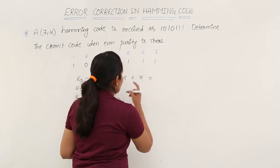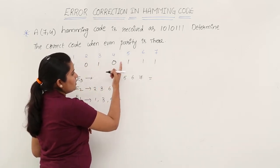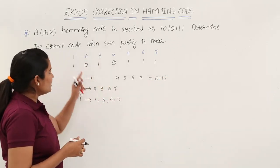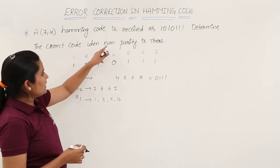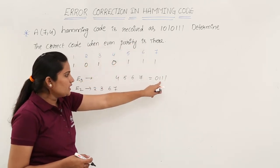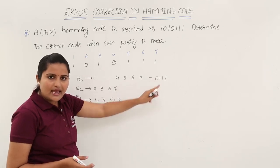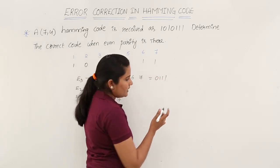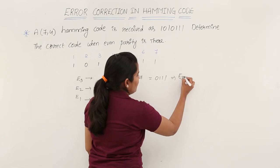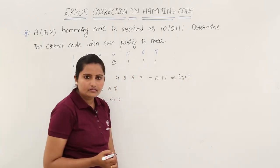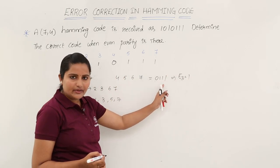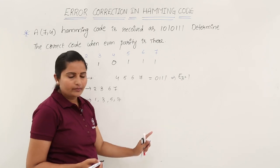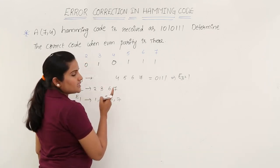Observing positions 4, 5, 6, 7, the bit values are 0, 1, 1, 1. Since even parity is required, you need to check the number of 1s. There are three 1s — an odd count. To make this even parity, E3 must be equal to 1. Similarly, for E2 using positions 2, 3, 6, 7.